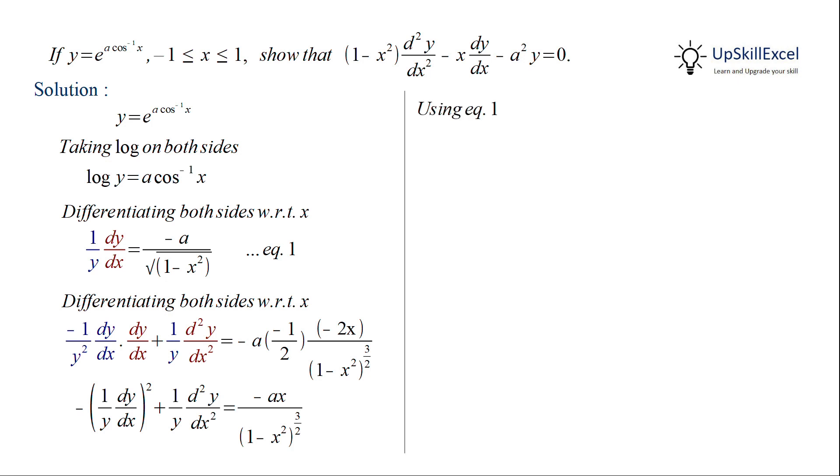After applying equation 1, we get an equation which on further simplification becomes minus a square by 1 minus x square plus 1 upon y d square y by dx square equal to x by 1 minus x square, 1 upon y dy by dx.